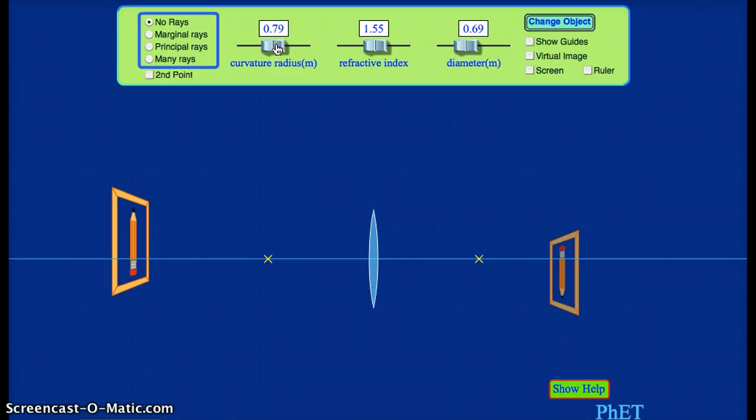I can also change the radius of curvature. So a large radius of curvature, our lens starts looking more flat. The focal points and the image location change. Small radius of curvature, the sides of our lens are more curved. And again, the focal length, the location of those focal points, and the image changes.